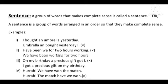We have been working for two hours. In the third example, 'a precious gift got I' is wrong, whereas 'I got a precious gift on my birthday' is correct — the words are in a proper order. And in the fourth example, 'Hurrah, we have won the match' is correct, whereas 'Hurrah, the match have we won' cannot be called a sentence because the words are not in proper order. So every group of words cannot be called a sentence unless and until the words are arranged in a proper order.